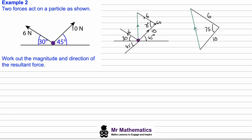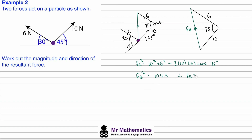Sketching this triangle separately and labelling the resultant as FR, we can use the cosine rule: FR² = 10² + 6² − 2 × 10 × 6 × cos 75°. Working out the right-hand side gives FR² ≈ 104.9. Taking the square root of both sides, the resultant force FR is approximately 10.24 newtons.